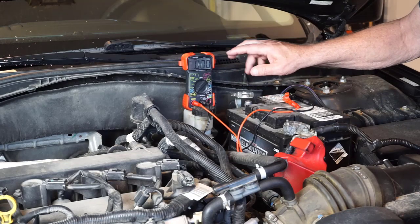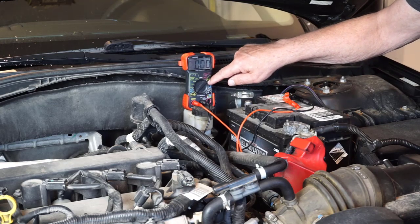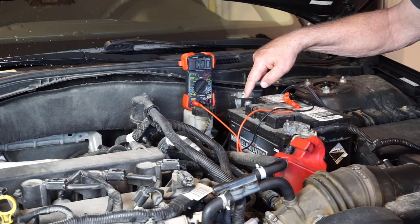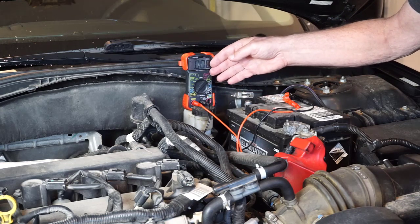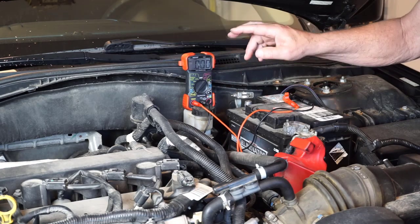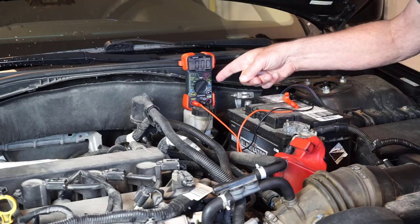Parasitic draws on today's modern vehicles can be quite challenging. Typically, we use an ammeter to complete the loop between the negative terminal and the negative cable and we measure the milliamp draws. I ain't knocking it, but today I'm featuring a gadget that offers some advantages to the ammeter.